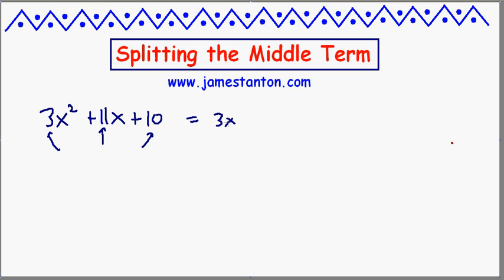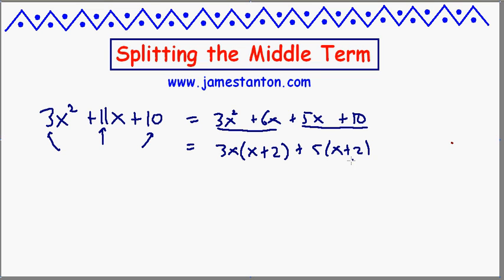And we're suggesting that they split the middle term into 6x plus 5x, the two factors you thought of. And then something magical happens. From the first two parts, we see a common factor of 3 and x, so that leaves behind an x plus 2. On the latter two parts, we see a common factor of 5, leaves an x plus 2.